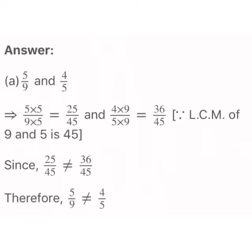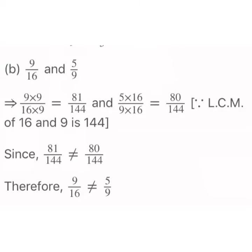We multiply both the numerator and denominator of 5 upon 9 by 5 to get 25 upon 45. Then we multiply both the numerator and denominator of 4 upon 5 by 9 to get 36 upon 45. Since 25 upon 45 is not equal to 36 upon 45, the fractions 5 upon 9 and 4 upon 5 are not equivalent fractions.